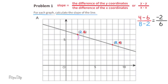The rise would go down 1 unit, and the run would go to the right 3 units. Either answer would be correct. The slope of this line is negative 2 sixths, or negative 1 third.